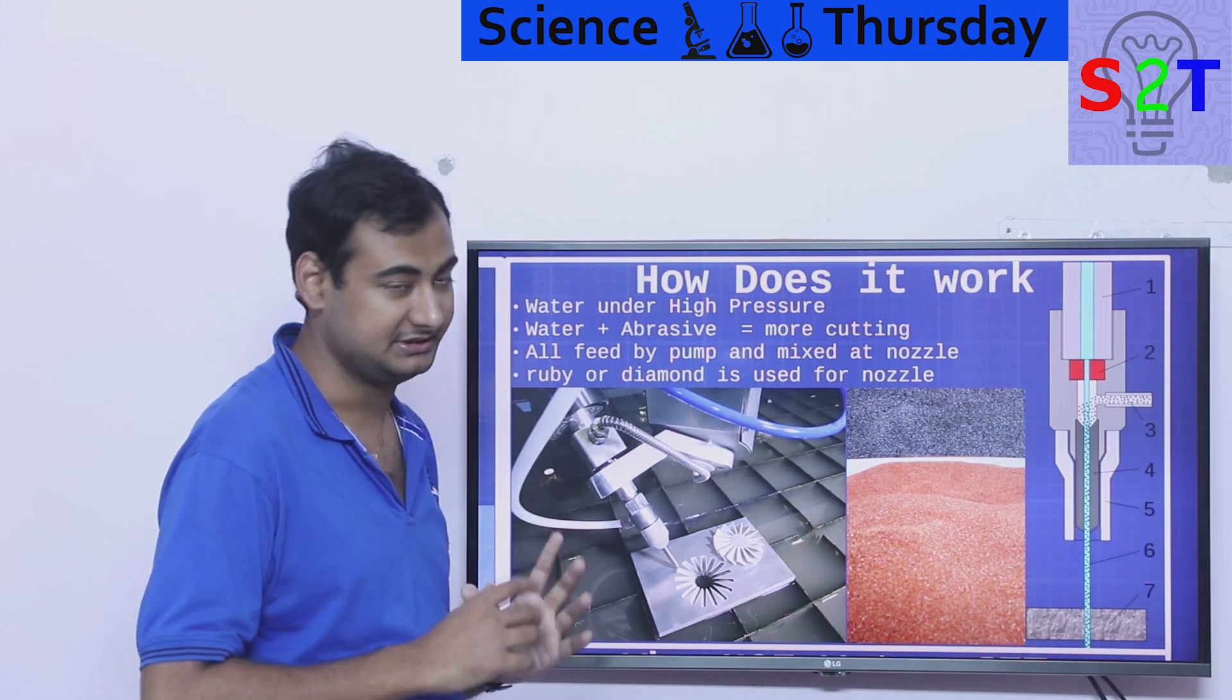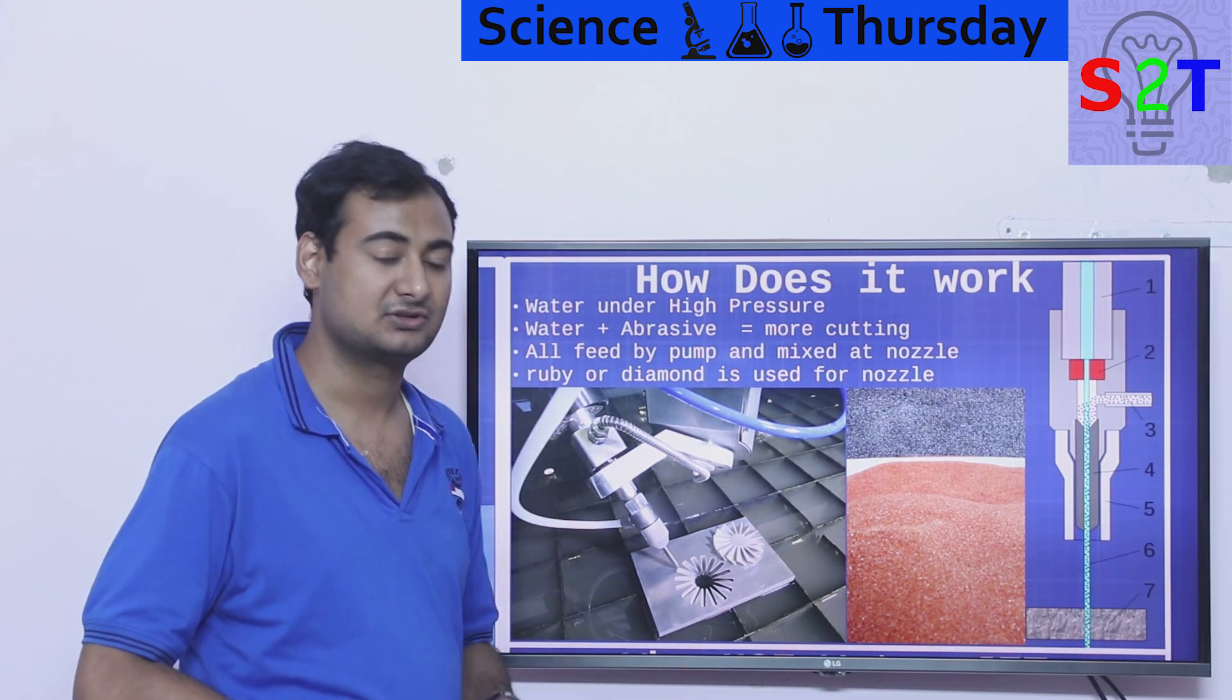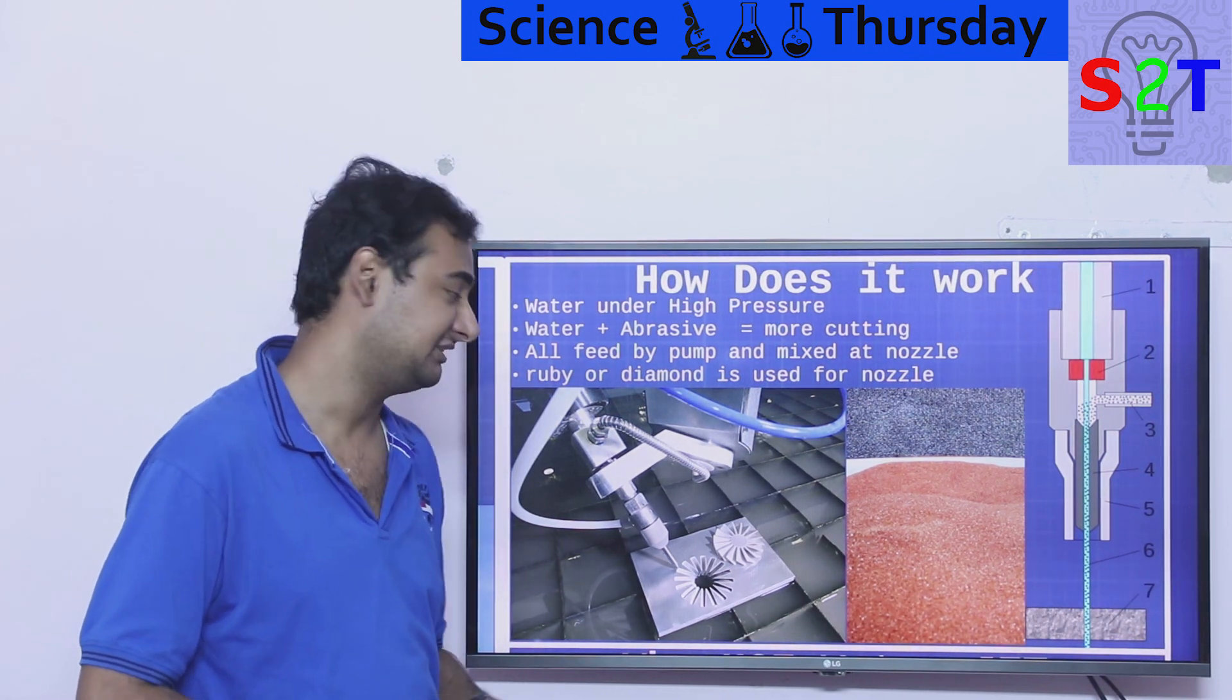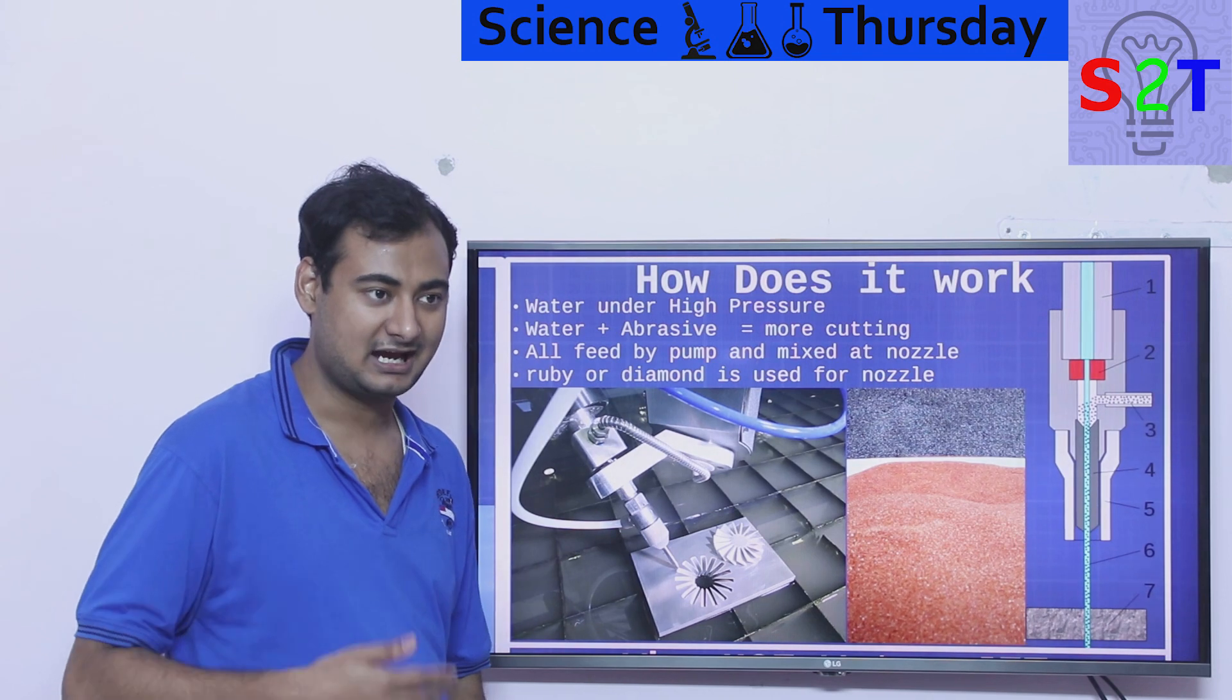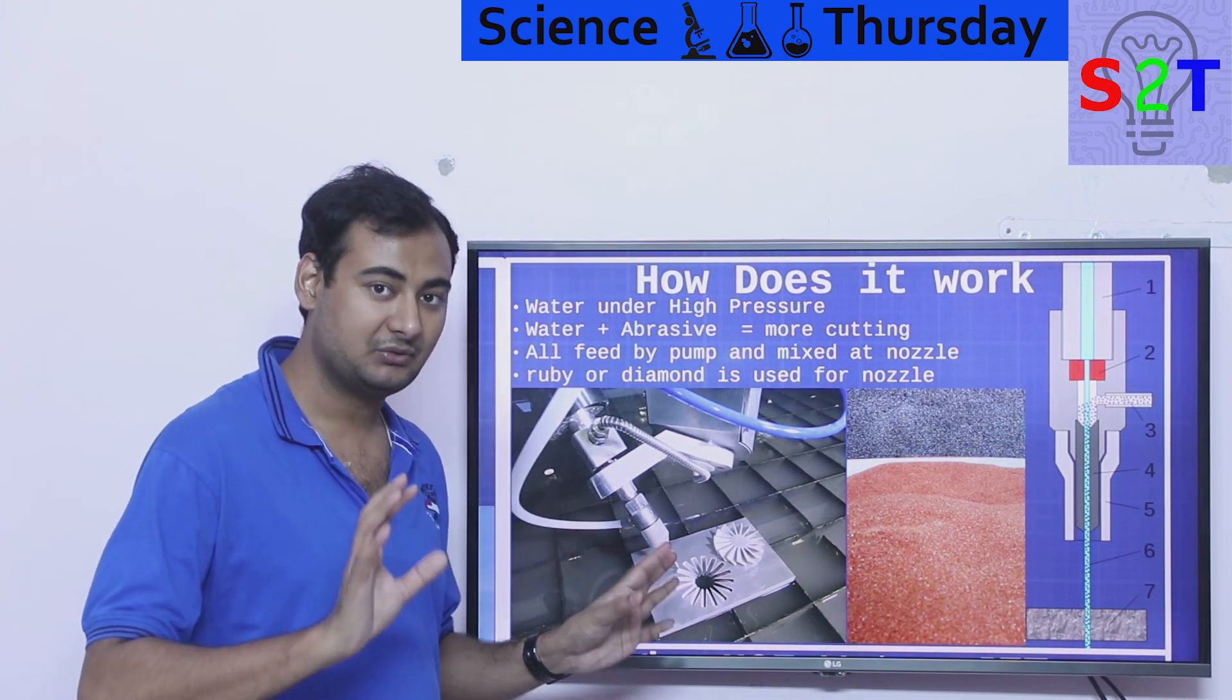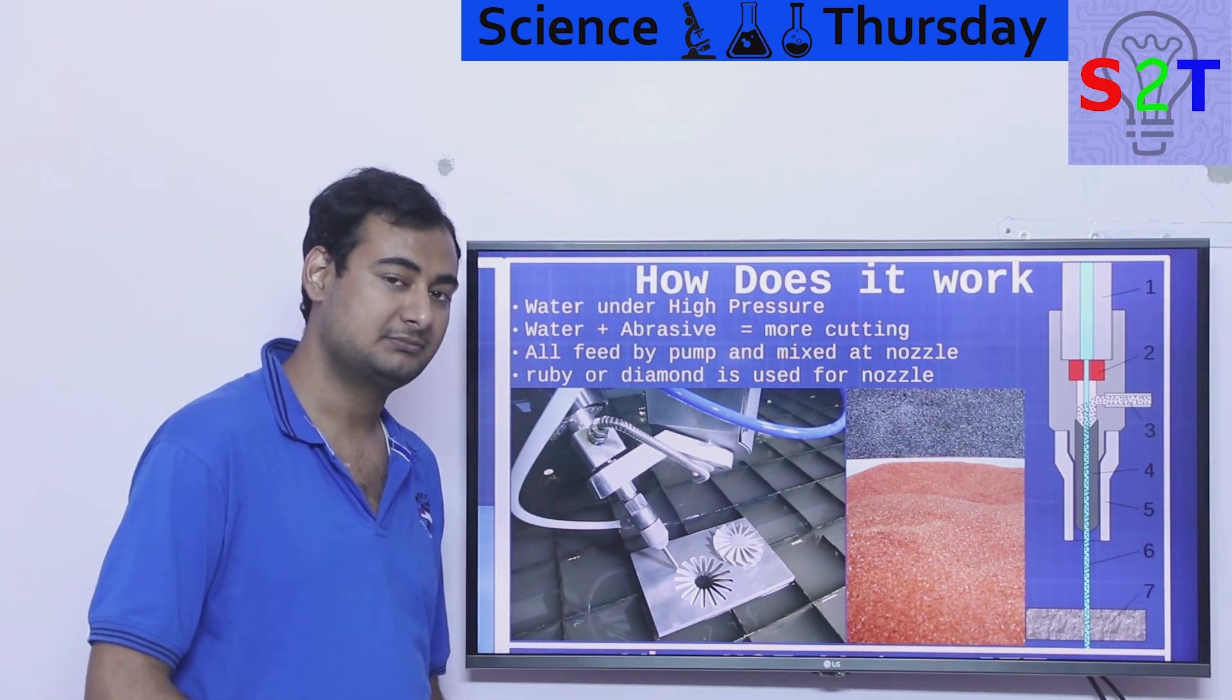All these things are done by pumps. Electrical pumps are generally used because that allows you to control the cutting power. You really don't want to waste electricity. If you are cutting aluminum, you don't want to be at high pressure that can cut through steel. You're wasting energy. So we want some control, that is why generally electrical pumps are used.